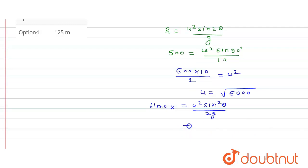So this will be u squared means this will be 5000 into sine squared theta, means this will be sine 45 degrees squared, upon 2g that is 20.